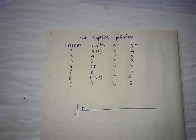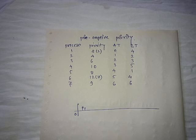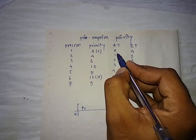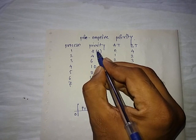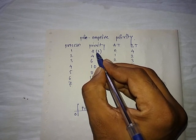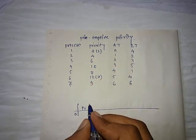We are going to run P1 until the next process arrives, because we have to check whether the next arriving process has a higher priority or not. If it has higher priority, we stop the current task; if it has lower priority, we can continue the current running task. The next process arrives at time 1 and has a higher priority than the currently running process, so we have to stop P1.